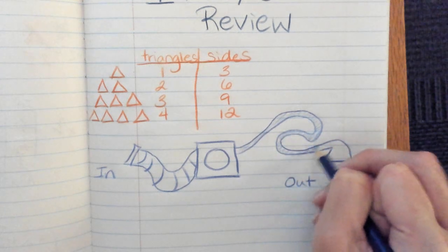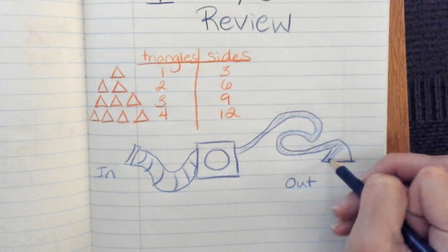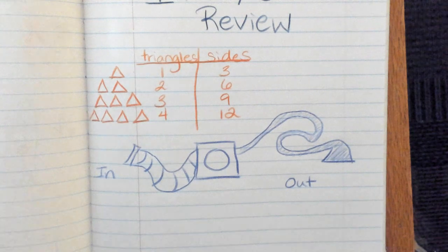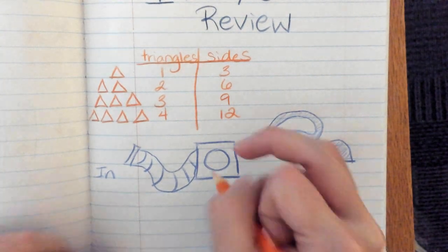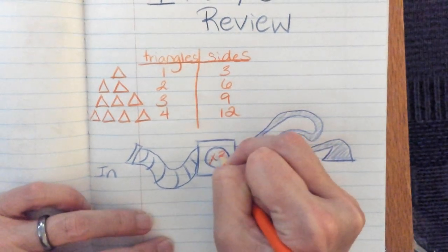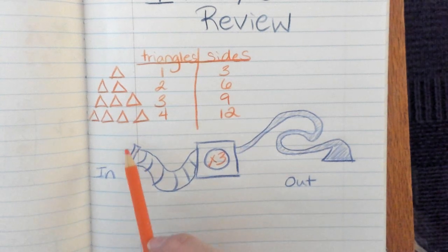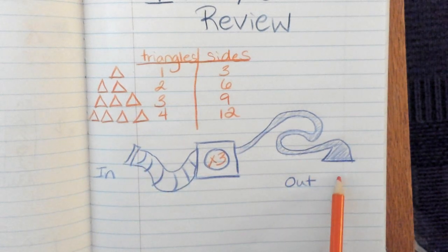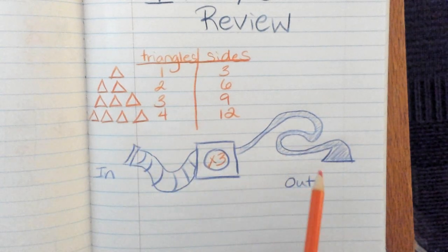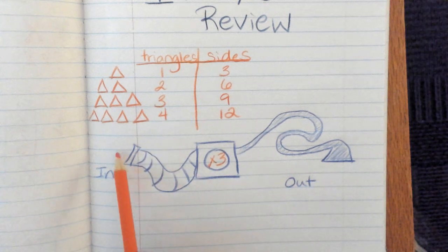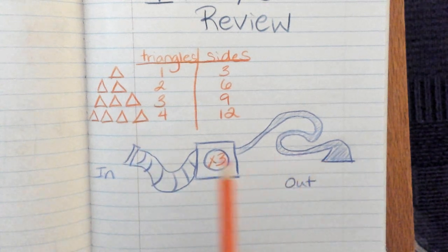And so this machine is going to always give you out a different number based on whatever you put in. And in the case of triangles and sides, what this machine is doing is multiplying by 3, right? Because 1 goes in, 3 comes out. 2 goes in, 6 comes out. 3 goes in, 9 comes out.